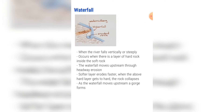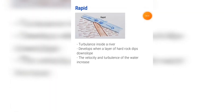How this erosion takes place: as the water falls over the cliff, the tiny droplets that splash off hit the rock behind the waterfall and erode it away. As the waterfall moves upstream, a gorge forms. Rapids are turbulence inside a river; they develop when a layer of hard rock dips downslope, causing the velocity and turbulence of the water to increase.